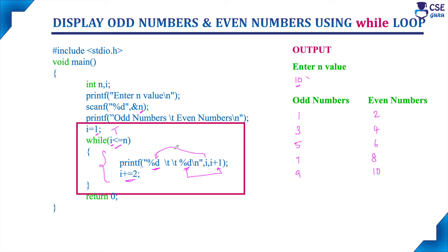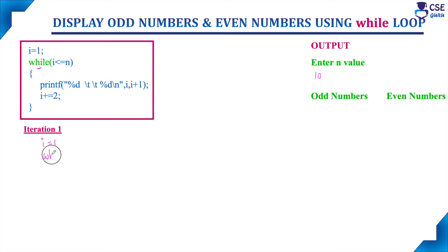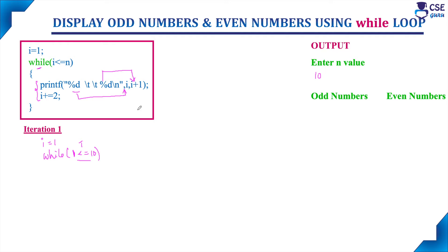Now we will trace this while loop logic. First we enter n value as 10, then display the odd numbers and even numbers message. In the first iteration, i value is 1. Check the condition: while i is 1, is 1 less than or equal to n value 10? Yes, condition is true. It will allow the body of the loop to execute once. Using the printf statement, it displays i value for odd number and i plus 1 value for even number. So i value is 1 and i plus 1 value is 2 — the output screen displays 1 and 2.